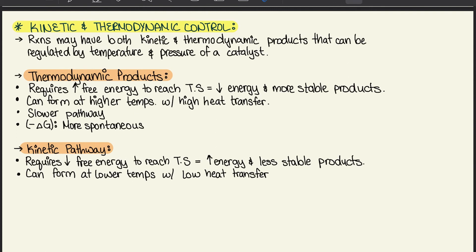Moving forward to a thermodynamic products. So this requires an increase in free energy to reach the transition state, which then creates lower energy and more stable products. And it can form at higher temperatures with high heat transfer. It's a slower pathway. However, it's more spontaneous because it has a negative delta G value.